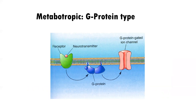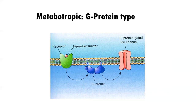Now we have the indirect entry method — metabotropic, the G-protein type. The neurotransmitter, let's say glutamate, binds to the receptor. But instead of a message being sent straight to the ion channel, a message is sent to a G-protein, which then decides whether or not the ion channel opens or closes. It's actually possible the G-protein closes the ion channel, so no ions enter. It's also possible it opens the ion channel, but it's not as predictable.